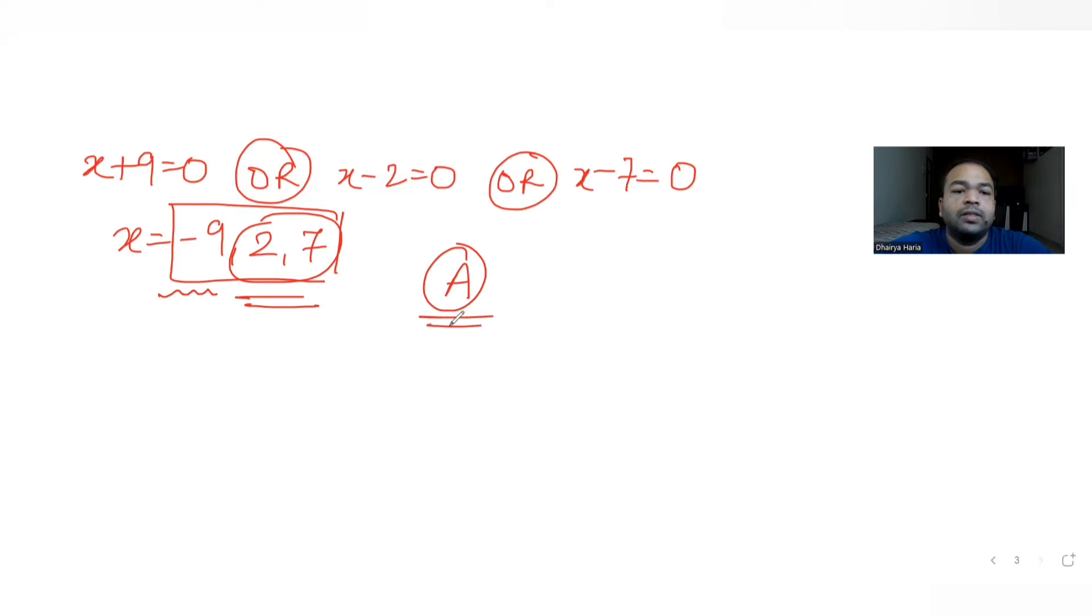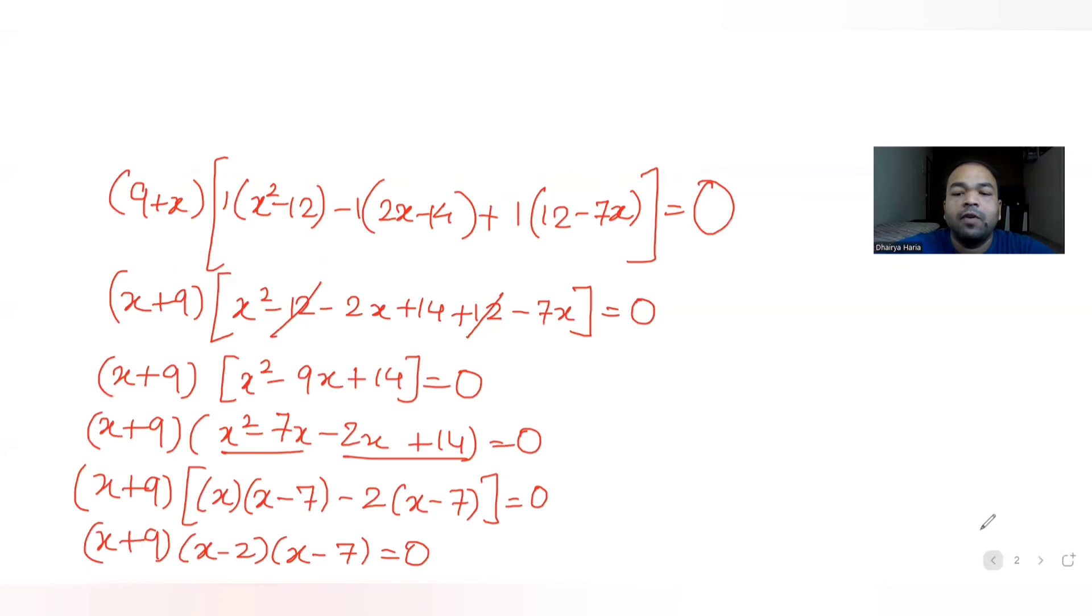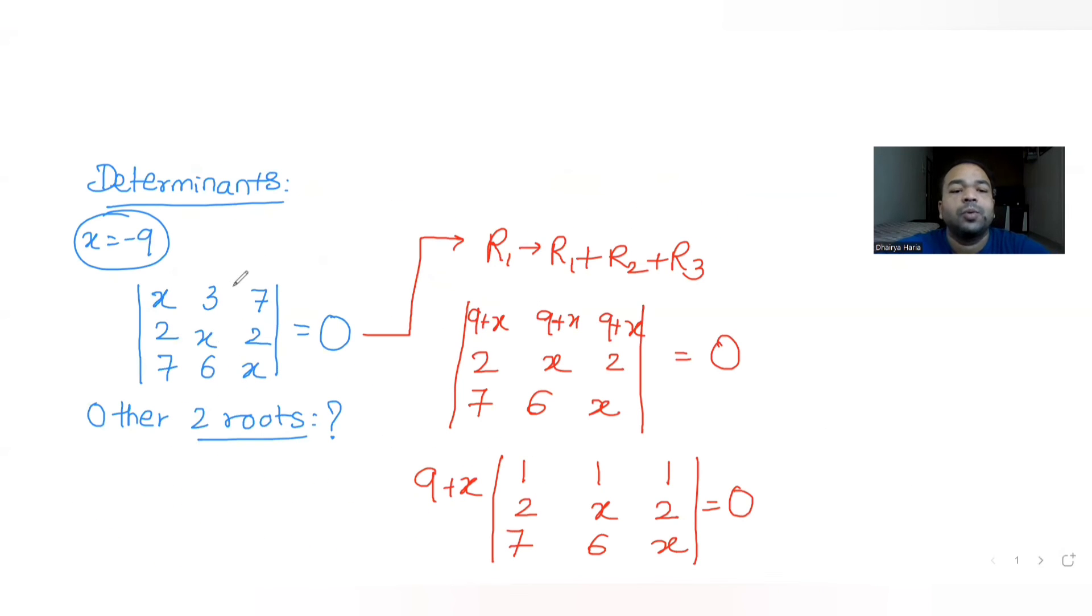So A is the answer for the question which is asked to us, what are the other two roots of this equation that are 2 and 7. I hope you have understood how to solve this type of question where determinants are involved and when we need to form this equation. If you directly form the equation, it will actually become a cubic equation and could become difficult to solve further.